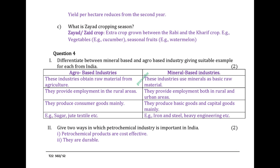Question 4. Differentiate between mineral-based and agro-based industry giving suitable examples. Agro-based industries obtain raw material from agriculture; mineral-based industries use minerals as basic raw material. Agro-based industries provide employment in rural areas; mineral-based industries provide employment both in rural and urban areas. Agro-based industries produce consumer goods mainly, e.g., sugar, jute, textile. Mineral-based industries produce basic and capital goods, e.g., iron and steel, heavy engineering.